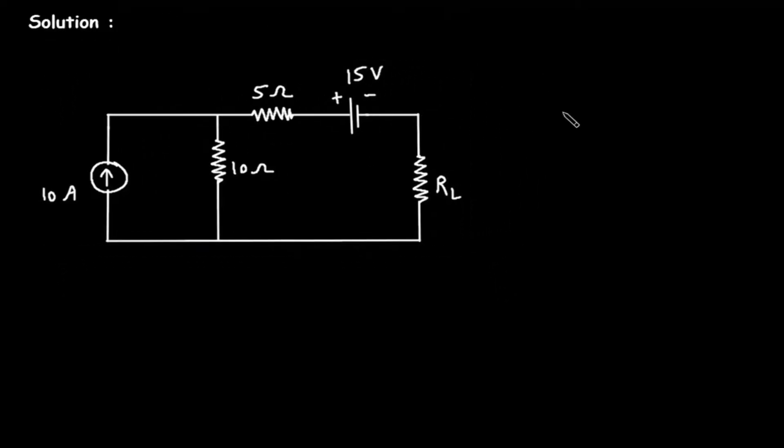Solution: For maximum power transfer, RL should be equal to RTH, where RTH is the Thevenin's resistance. So we have to find the value of RTH and we will get the value of RL.